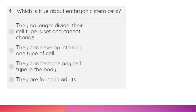Which of the following is true about embryonic stem cells? The options are: they no longer divide; their cell type is set and cannot change; they can develop into only one type of cell; they can become any cell type in the body; or they are found in adults. The correct option is: they can become any cell type in the body. That is the nature of embryonic stem cells.